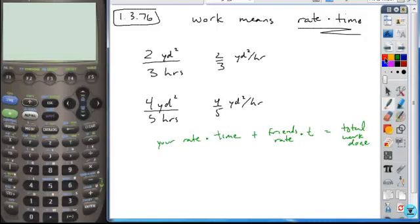So if you look at this and plug in what you have here, your rate was two-thirds T times T. Your friend's rate was four-fifths T. And the total amount of work you get done here is eleven square yards, so you set that equal to eleven.